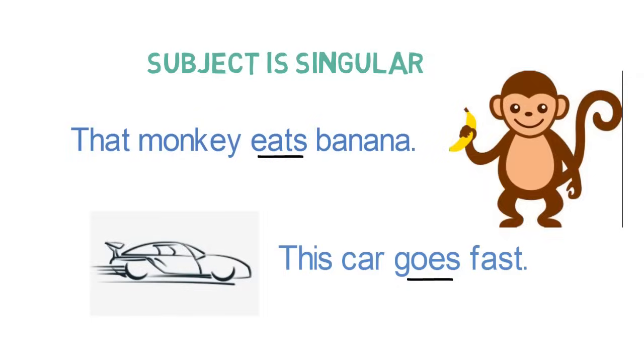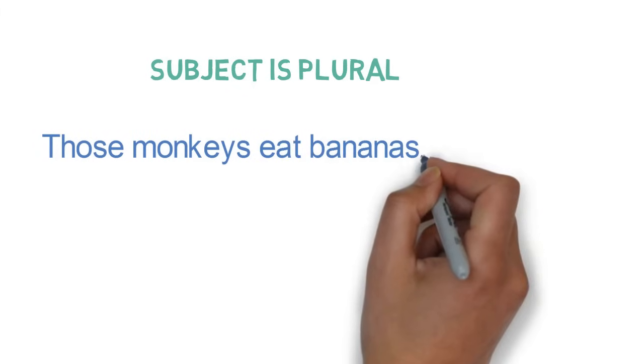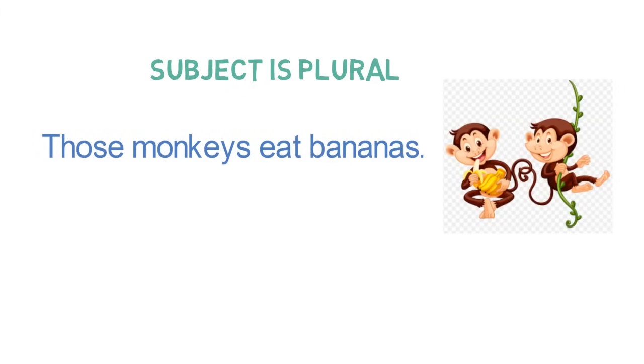Now, let's look into same examples where subject is plural. Those monkeys eat bananas. Here, subject is monkeys, which is plural in form. So, verb will also be plural in form. So, in this case, we used eat.